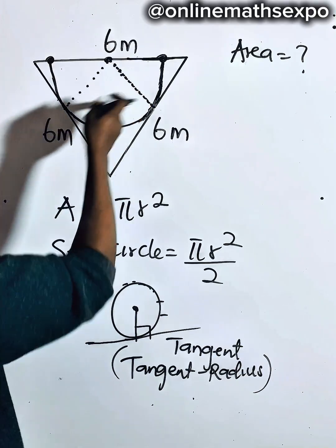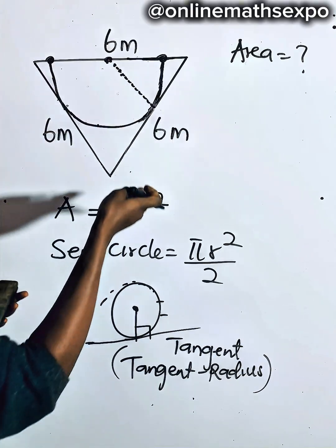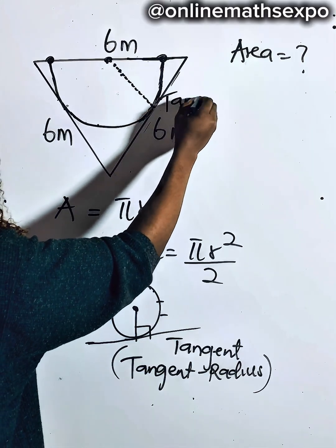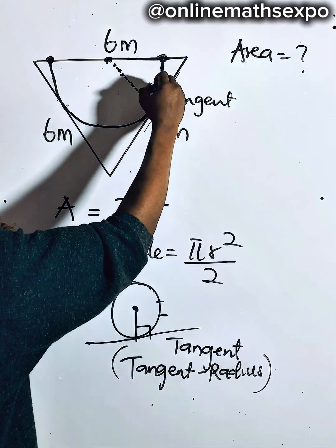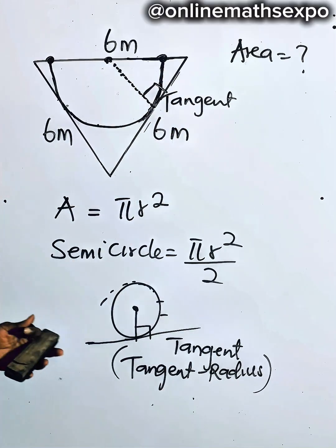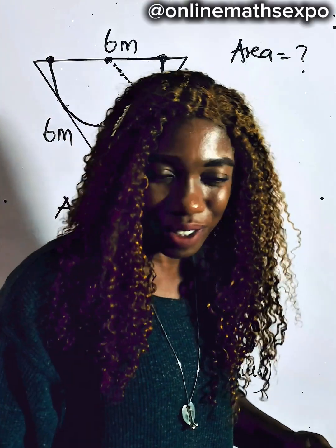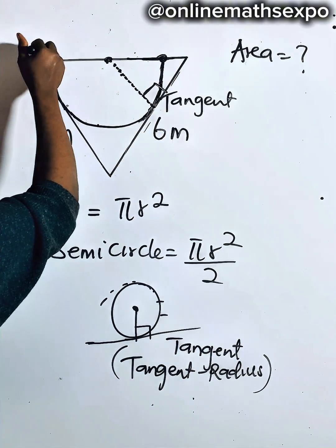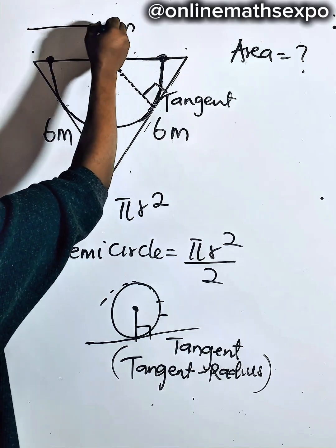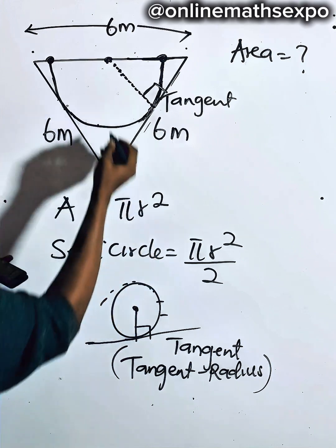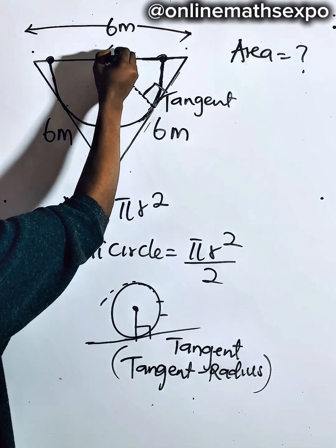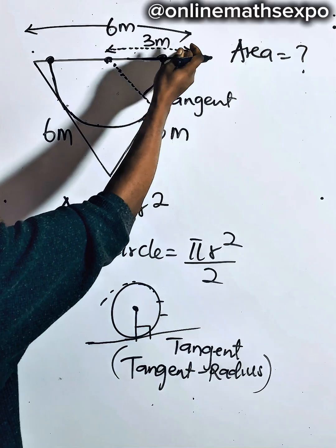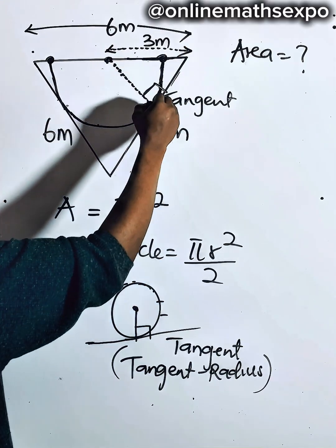We have formed the significant radius from the center to the point where the arc touches the side of the triangle. Since the arc touches that side, it forms a 90-degree angle there by the tangent-radius theorem. Now, the full base of the triangle is 6 meters, which is the diameter, so from the center down to one end is half of that — which is 3 meters. We know from here to the arc is our radius R, so we need to find R.